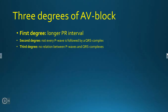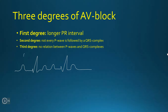First degree AV block: we have a P wave and we have a QRS complex, and then we have a T wave, and then we have a P wave, QRS complex, and then a T wave. You can see that the PR interval is significantly longer than it should be.